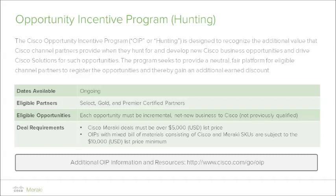The actual deal requirements for Cisco Meraki OIP registration mandate that each deal exceed $5,000 according to the list price. Should the OIP be a mixed bill of materials consisting of both Cisco and Meraki part numbers, they are subject to a $10,000 US list price minimum. All requirements are closely reviewed and enforced by the Cisco Meraki account reps assigned to approve or deny all submitted opportunities. For additional OIP information and resources, please visit cisco.com/go/oip.